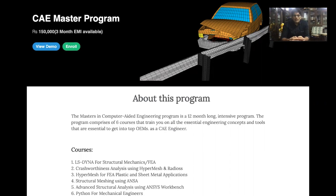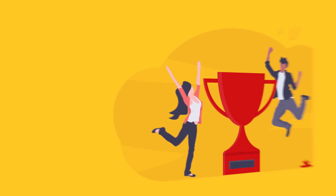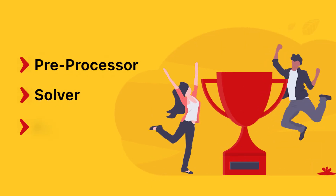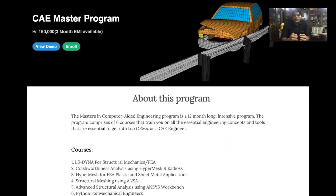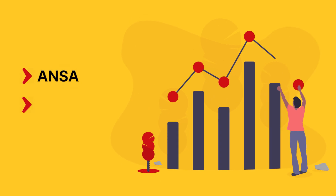So how is this course structured? Initially you will start with Structural Meshing using ANSA and HyperMesh for FEA Plastics and Sheet Metal Applications. These two courses provide you a very good fundamental knowledge on pre-processing. In any CAE analysis there is a pre-processor, a solver, and a post-processor. The two tools most relevant in the industry for pre-processing are ANSA and HyperMesh.